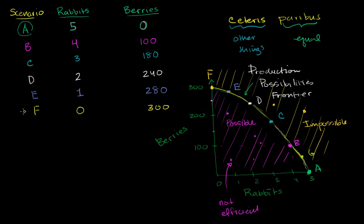So let's say we're starting off in Scenario F. We are vegetarians. We are only getting berries. We are not spending any time going after rabbits. But now we're starting to crave protein, and we say, well, what is going to be the opportunity cost if I go for that extra rabbit? If I go for that extra rabbit, then what's going to happen?